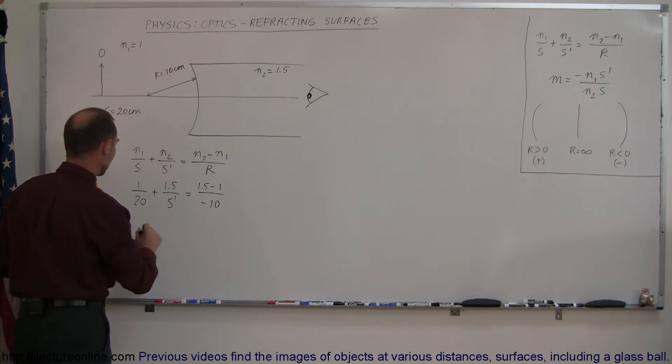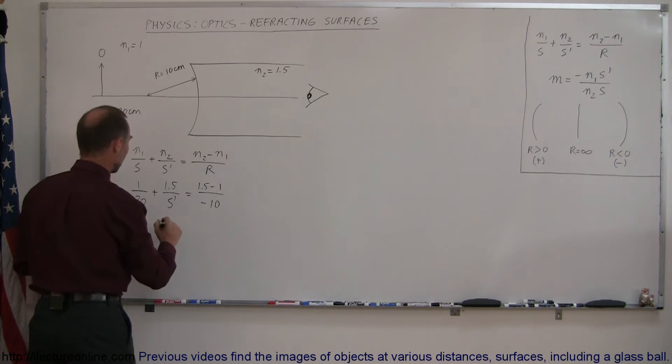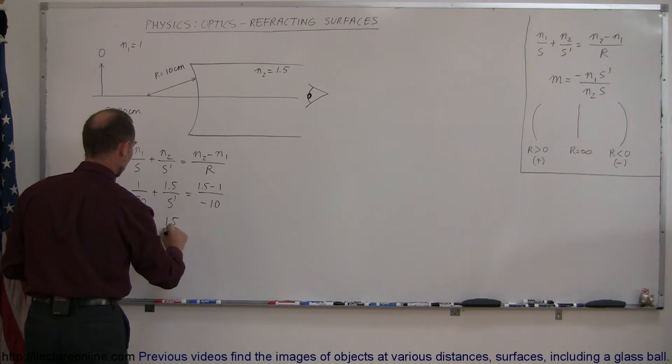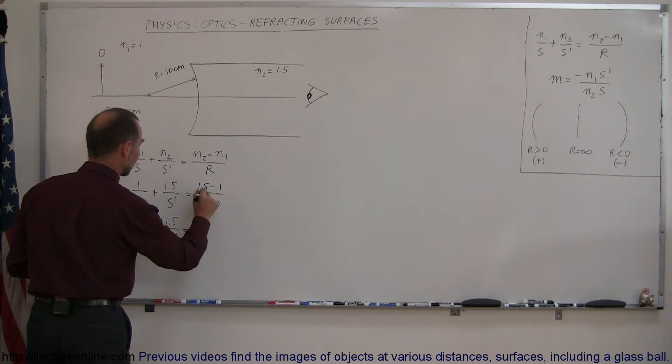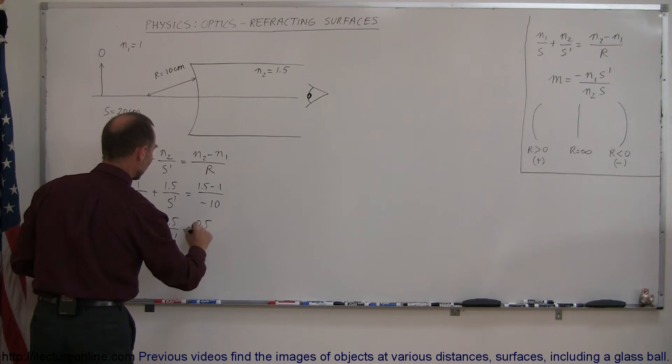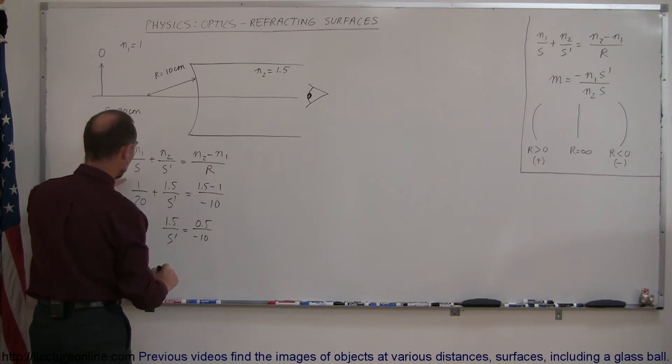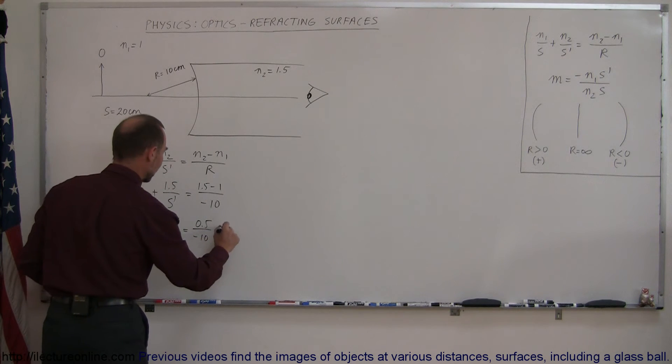Simplifying this a little bit, and bringing the 1 over 20 over to the other side, we can say this is 1.5 over S prime, which is equal to 0.5 over minus 10. And when we bring the 1 over 20 over to the other side, it becomes minus 1 over 20.